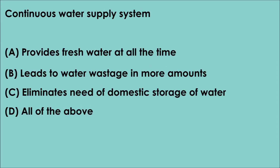Question 9. Continuous water supply system: A. Provides fresh water at all times. B. Leads to water wastage in more amounts. C. Eliminates need of domestic storage of water. D. All of the above. The correct answer is option D. All of the above. In continuous water supply system, fresh water is provided all the time, water wastage takes place in more amounts, and it eliminates the need of domestic storage of water.